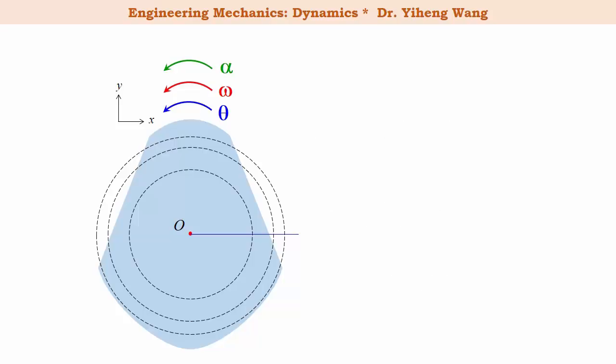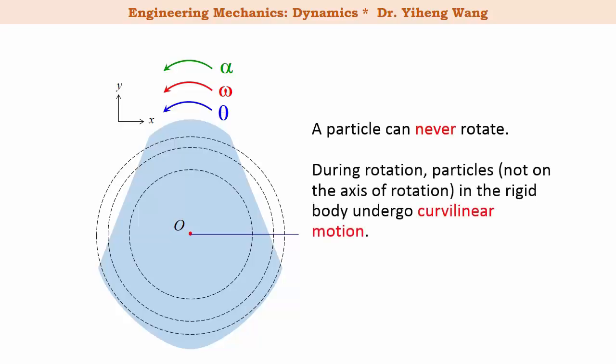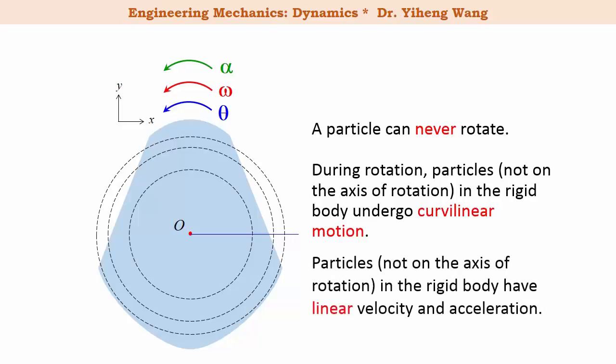A particle is an idealized concept of an object with no size or shape, therefore a particle can never rotate. During the rotation of the rigid body, all particles in this rigid body undergo curvilinear motion following a circular path. The rigid body itself has angular velocity and angular acceleration, but the particles in the rigid body have linear velocity and linear acceleration — except for particles on the axis of rotation, which have no motion.